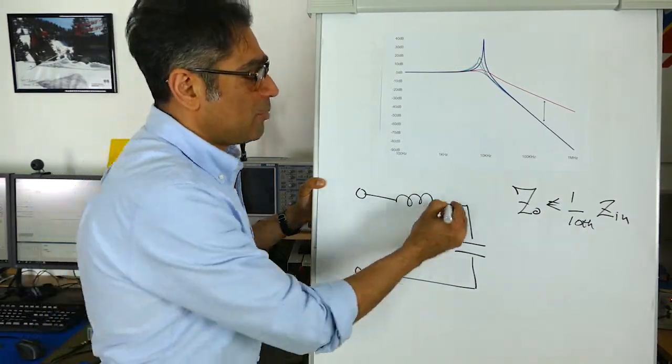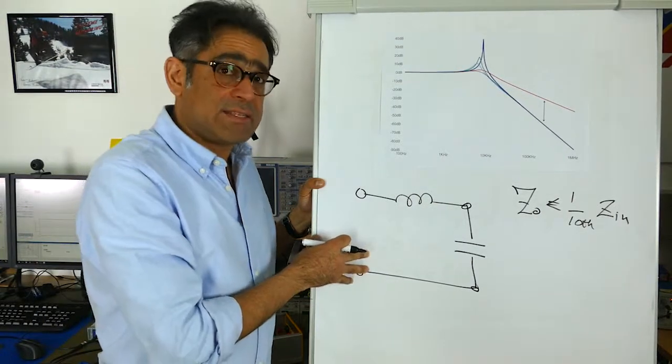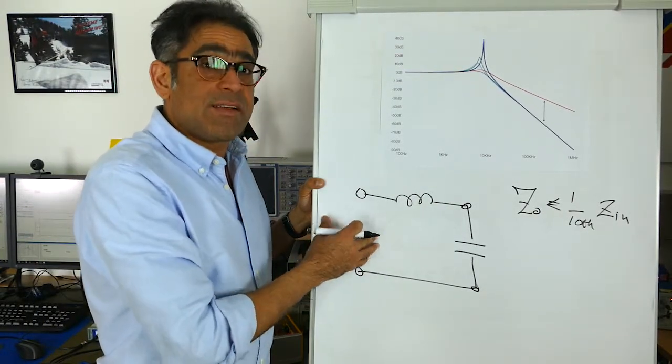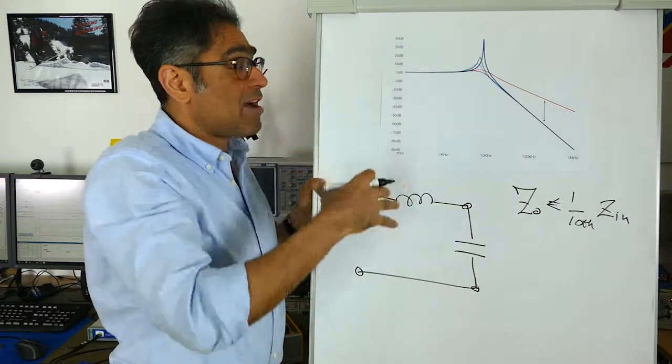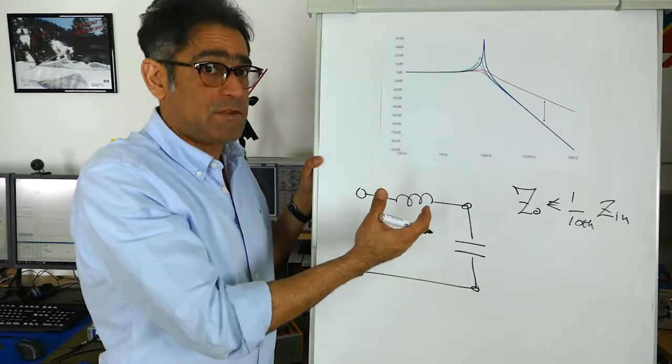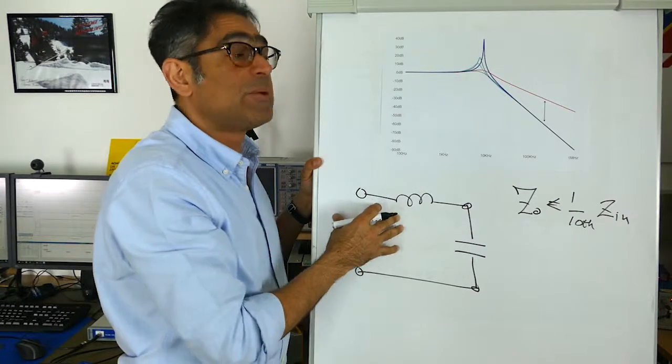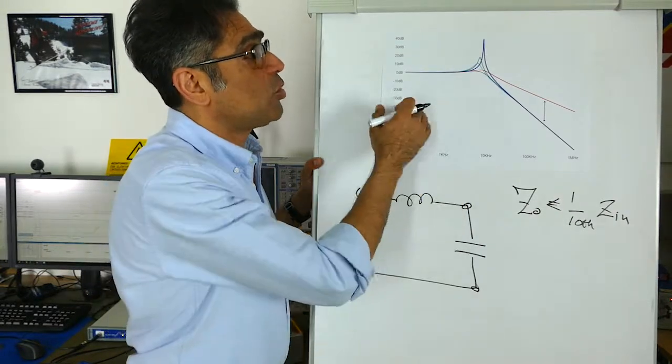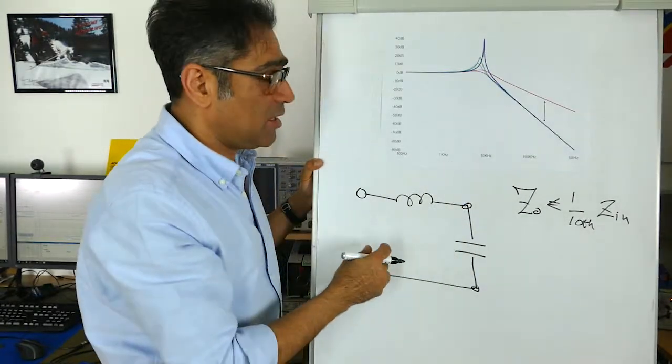Here now we have a problem because this filter resonates and at resonance the impedance of the filter also resonates and goes up. I have not shown the plot of the impedance of the filter. I've only shown you the Bode plot of the filter but we know that the impedance also peaks at resonance and in our case is around seven kilohertz for now.